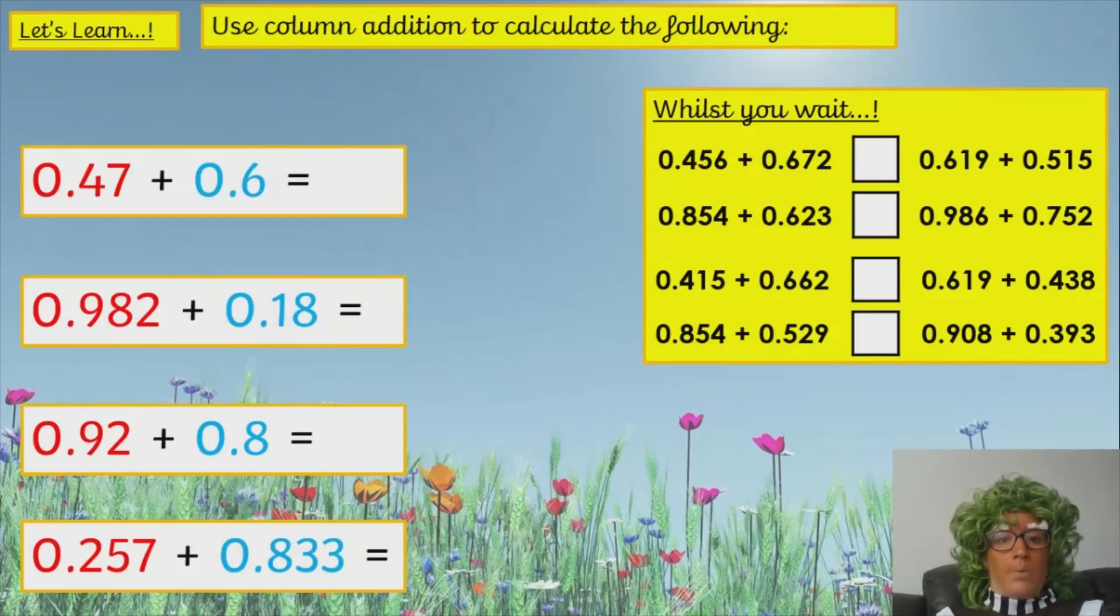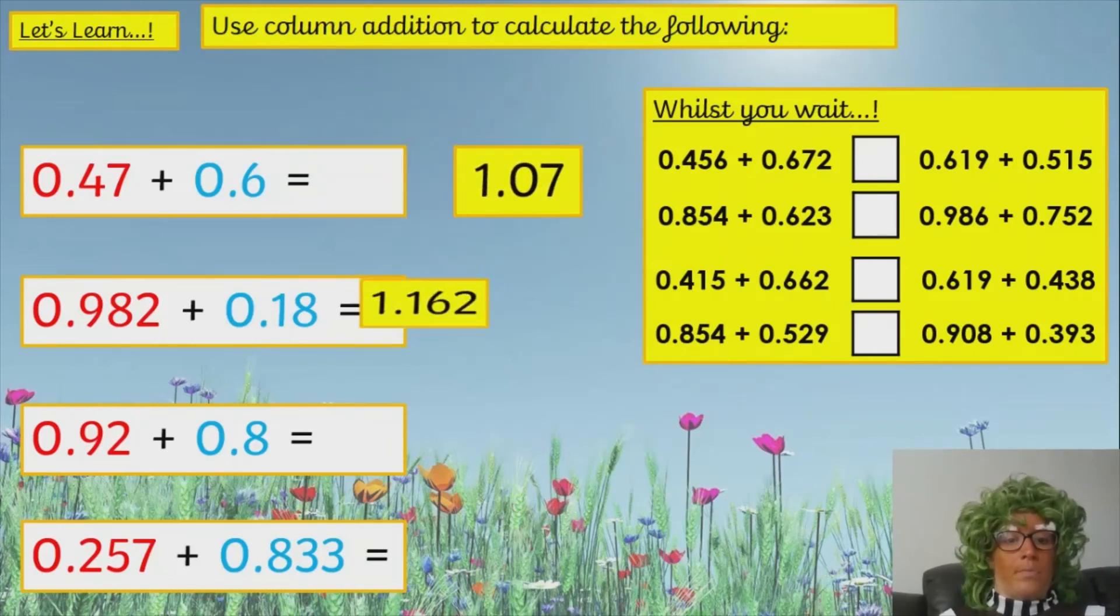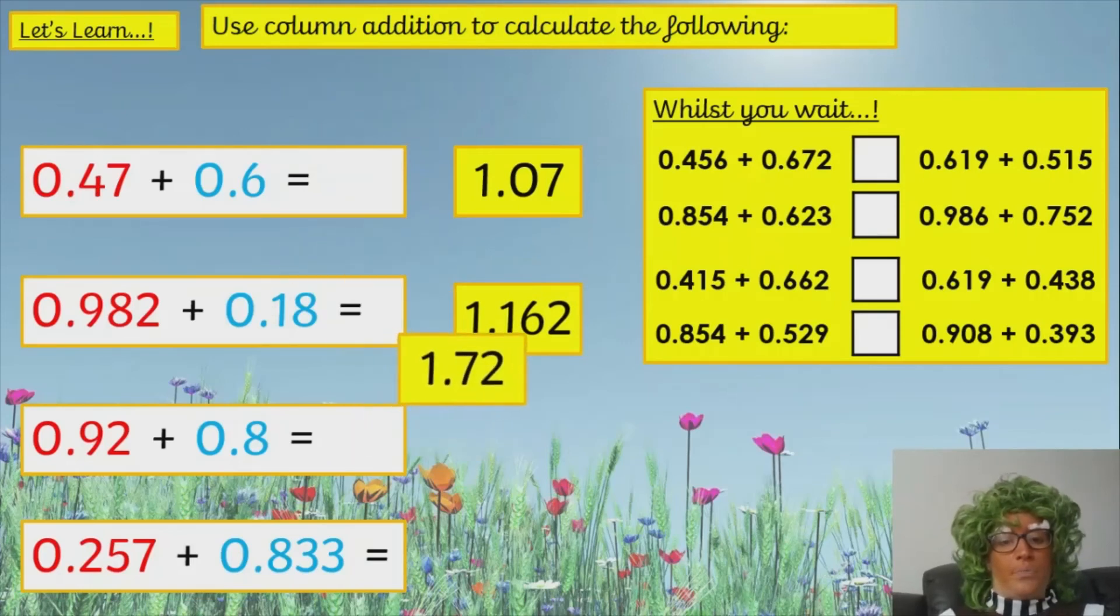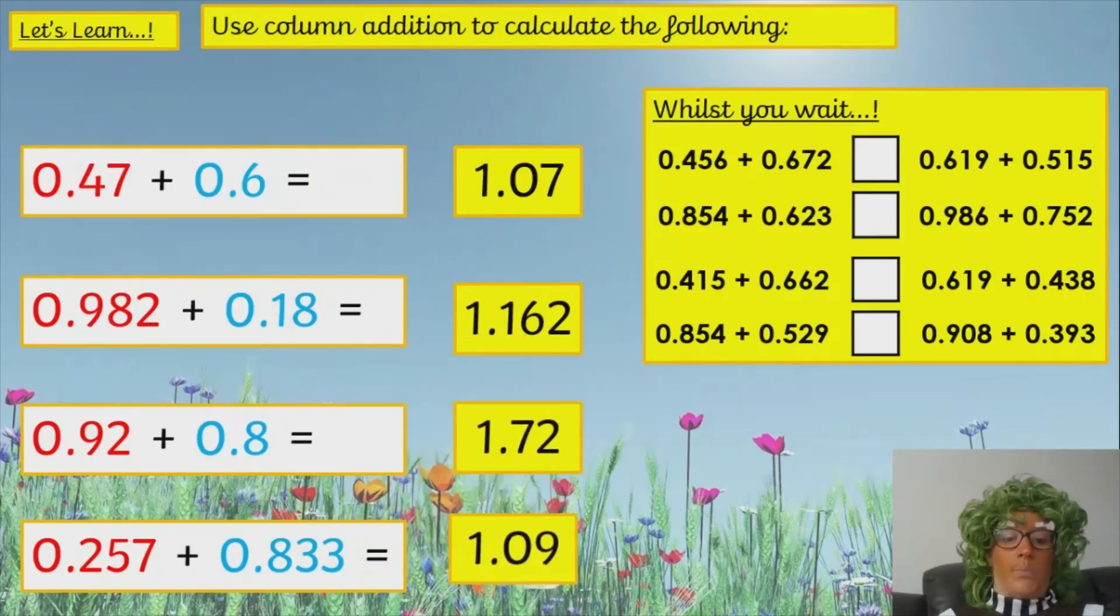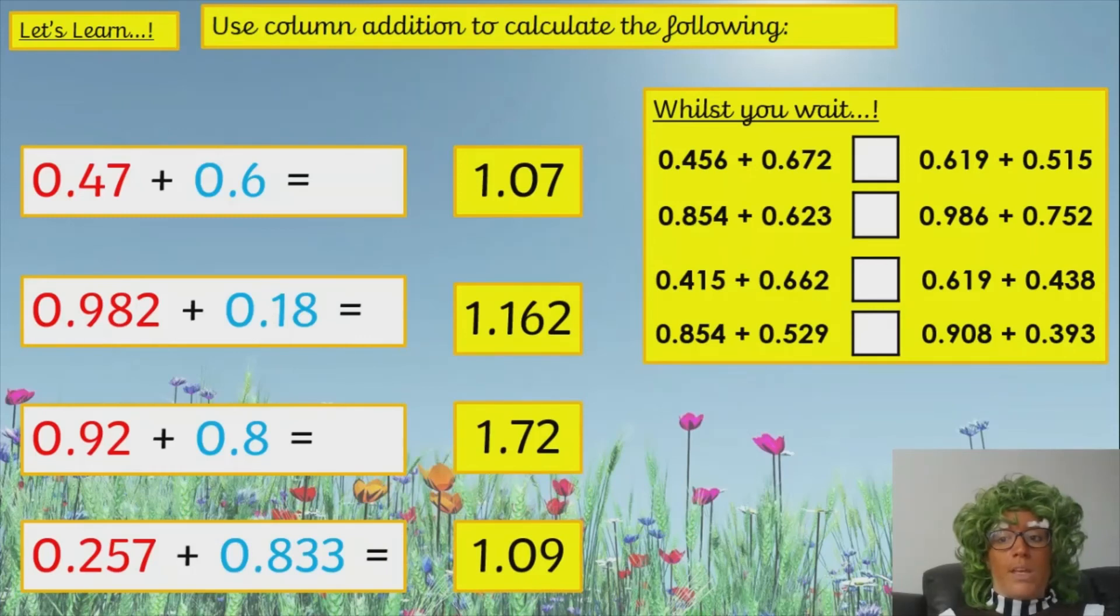Pause the video now, and come back to me when you're ready for the answers. So, we've got 0.47 plus 0.6, 1.07, 1.162, 1.72, and 1.09. And then if you've got onto the whilst you wait, first one is less than, second one is less than, then you've got greater than, and greater than.